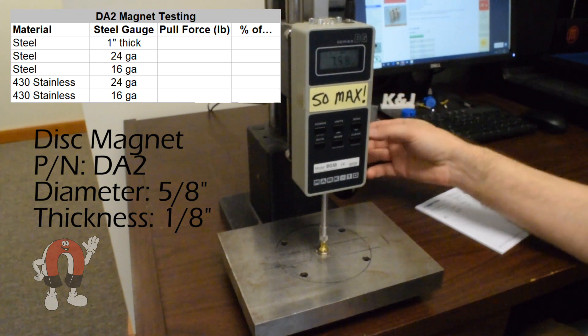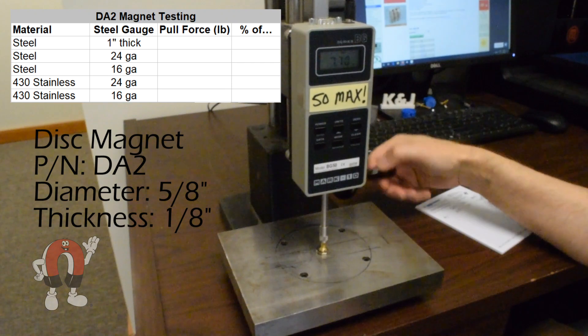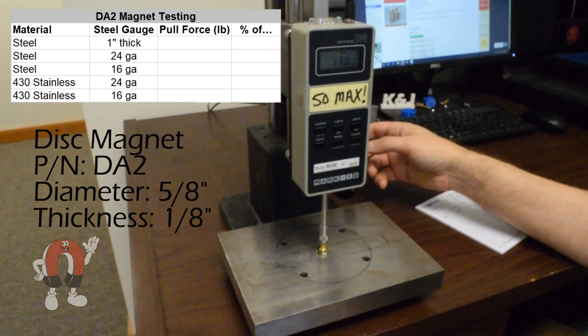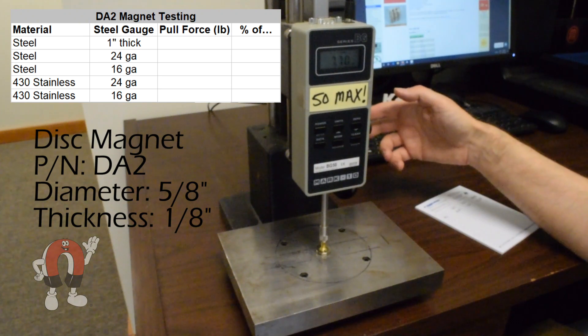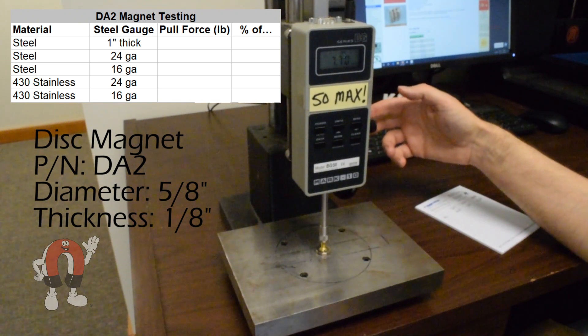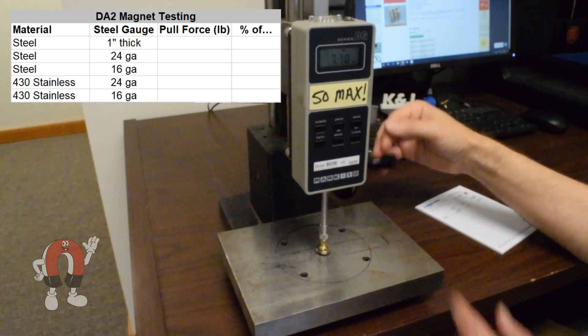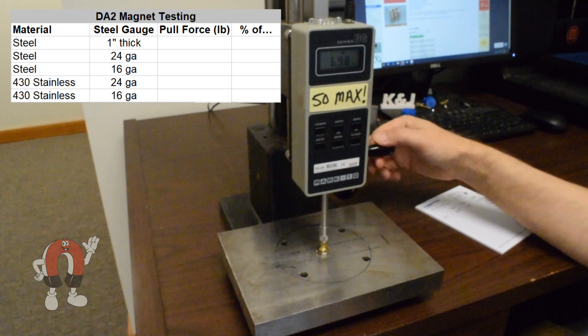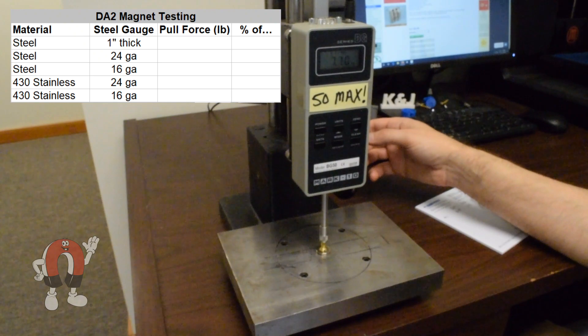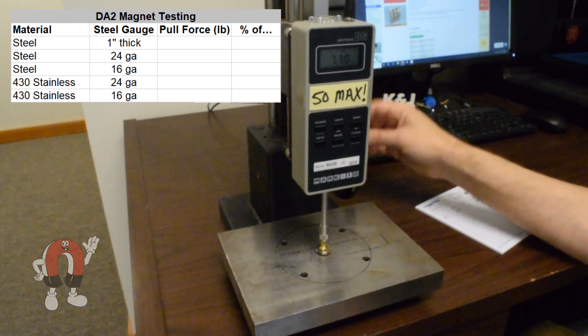Let's consider a modestly sized disc magnet, this 5⅛ inch diameter by ⅛ inch thick disc. For a baseline, we recorded the pull force to a big thick steel plate. This is just like our pull force case one. For this particular magnet, we measured about 7.7 pounds.